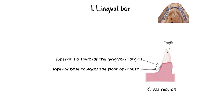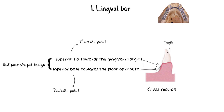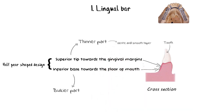The bulkiest portion of the lingual bar is located towards the floor of the mouth, while the tapering, thinner portion is located towards the gingival margin. The lingual bar should be contoured and smoothed so it does not present any sharp margins to the tongue. The superior border should taper gently without sharp margins, while the inferior border should be slightly rounded and smoothed out.